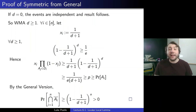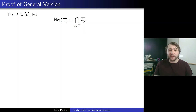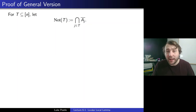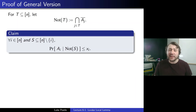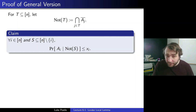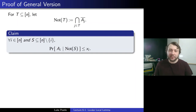On to the general proof. For notational purposes, for T a subset of [n], let not-T denote the intersection of all the complement events not-Aj for j in T. The key to proving the general version is a claim: for every i in [n] and S a subset of [n] minus {i}, the probability of Ai conditioned on not-S is at most Xi. We know the probability of Ai was at most Xi times that product; we claim that whenever you condition on not-S for any other set S, it's always at most Xi itself.